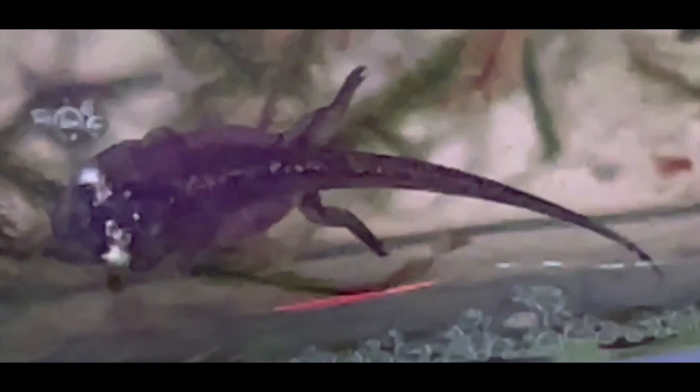Little toes, kind of nubby toes at the moment. They start to develop some nubs where the arms will be.